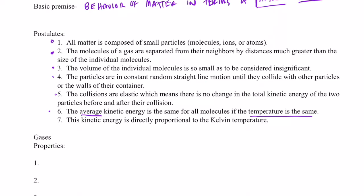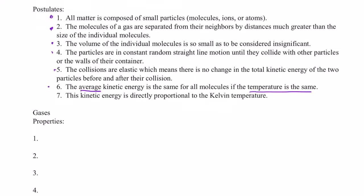So some might have a little higher energy, some might have a little lower energy, but that average, so long as the temperature does not change, is going to be constant. We'll describe that in a bit more detail later on in this unit. Number seven, this kinetic energy is directly proportional to a new temperature scale for us, the Kelvin temperature scale, which is based on something called absolute zero.